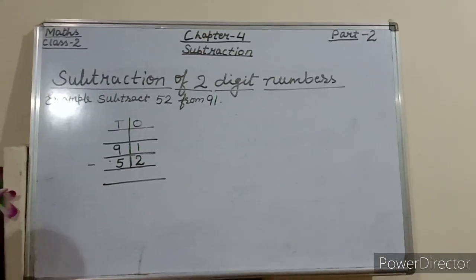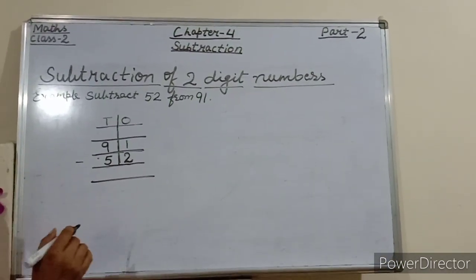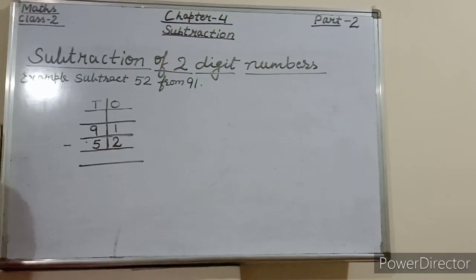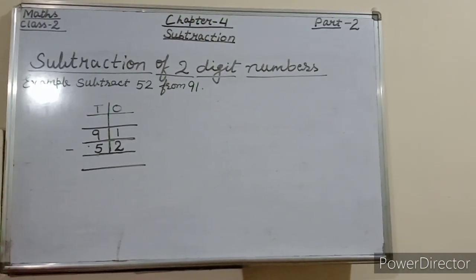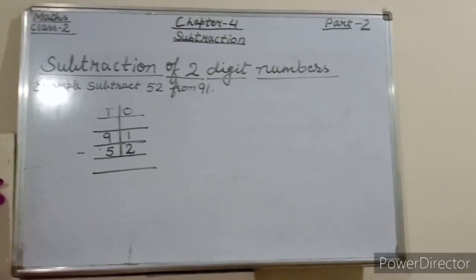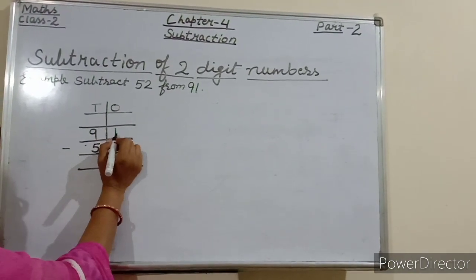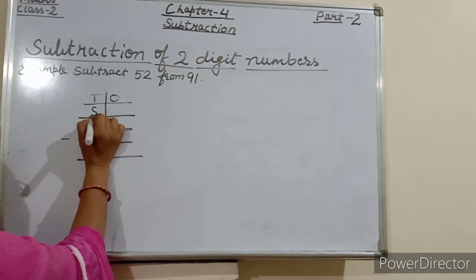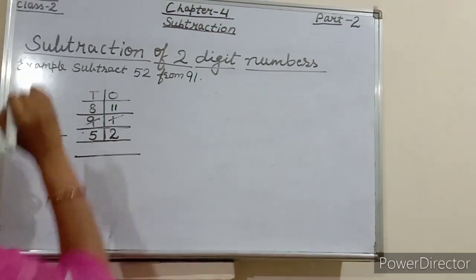So what we have to do now? We have to subtract. Students, you all know 1 is less than 2. So is it possible to subtract 2 from 1? No. Then what we will do? We will borrow from 9 tens. So regroup 9 tens 1 one as 8 tens and 11 ones. So we will write here 8 tens and this 1 will become 11 ones.